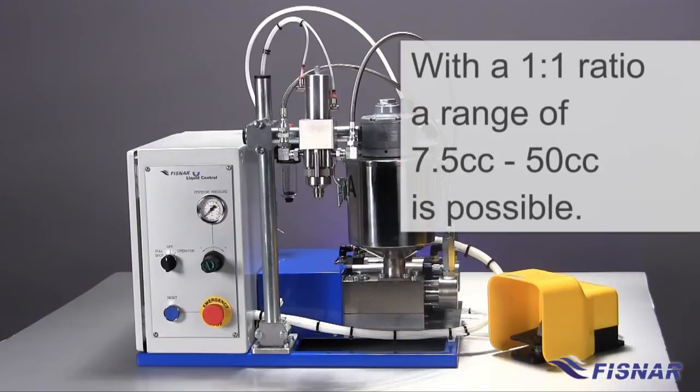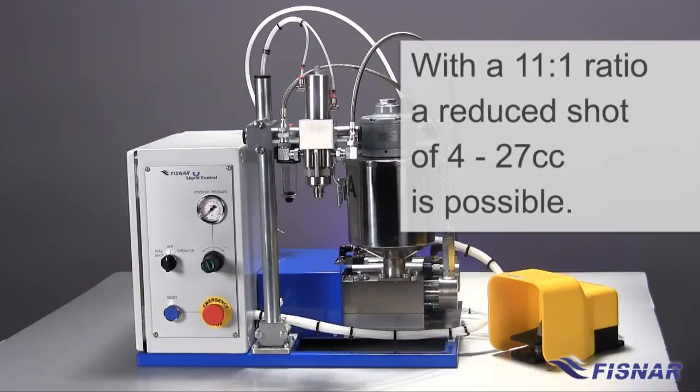Therefore, in an example of a 1 to 1 ratio, a range of 7.5 to 50 cc is possible. When selecting a ratio of 11 to 1, the maximum ratio that the machine can accommodate, a reduced shot range in the order of 4.0 to 27 cc is possible.